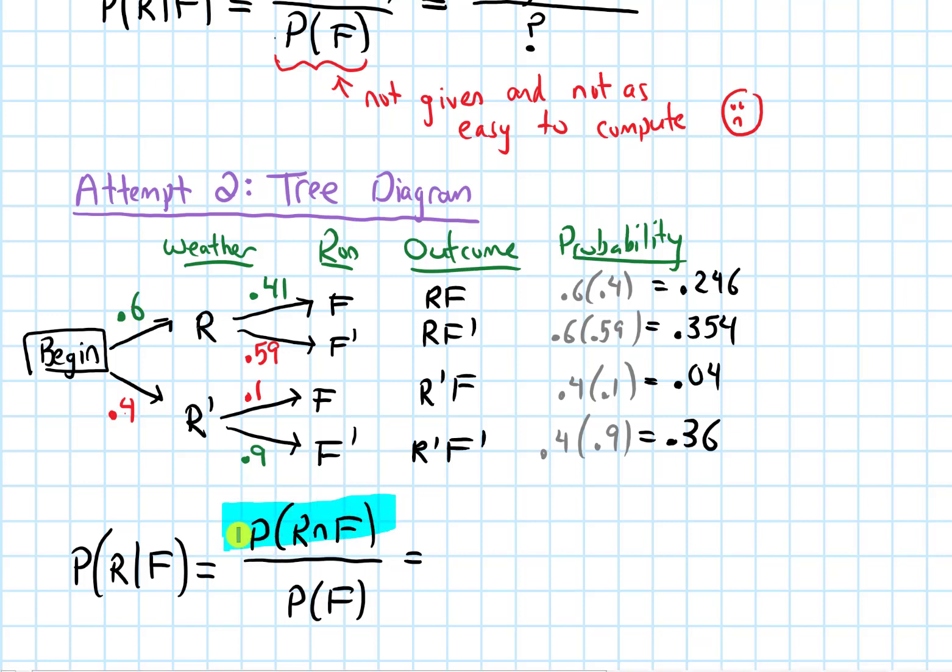On the numerator, we need the probability that R and F occur, which is this outcome, so we get 0.246. The denominator is the probability that F occurs, the probability that he falls, and that happens in this outcome and as well as this one. So we have to add 0.246 to 0.04.